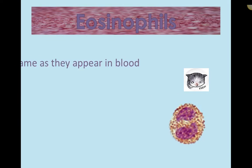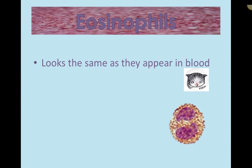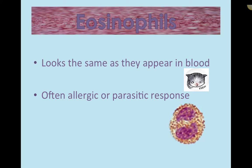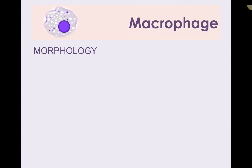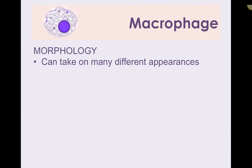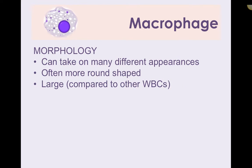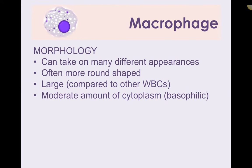To recap: Russell bodies are on mott cells, and mott cells are plasma cells with immunoglobulin globules called Russell bodies. Eosinophils look the same in inflammation as they appear in the blood — they don't undergo a lot of change. They're associated with allergic or parasitic responses. Here's a happy eosinophil — it looks the same as it does in the bloodstream.